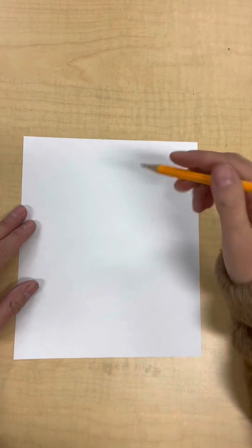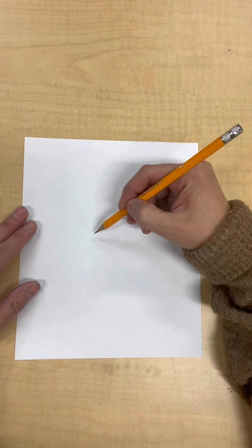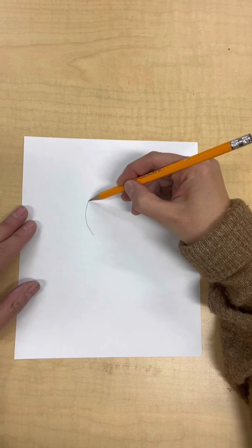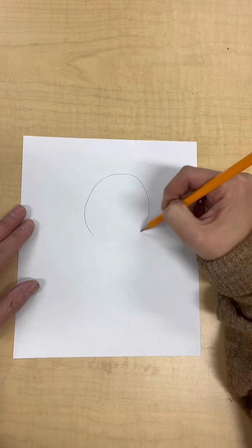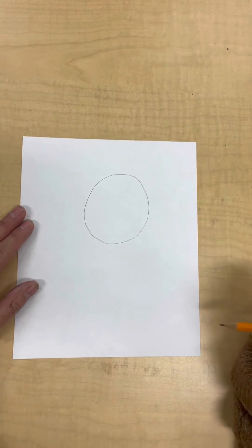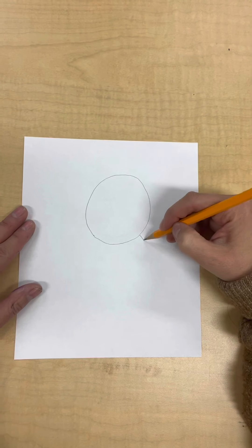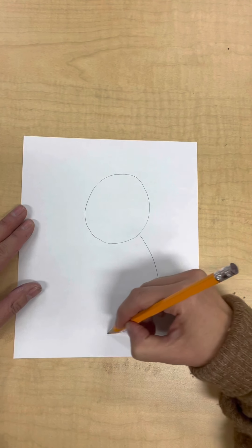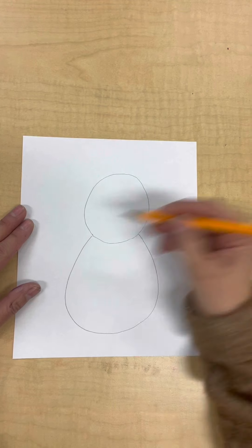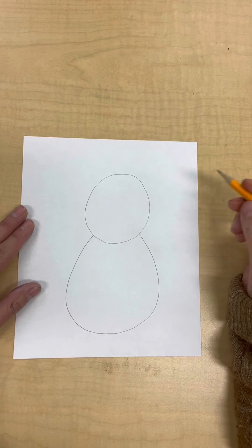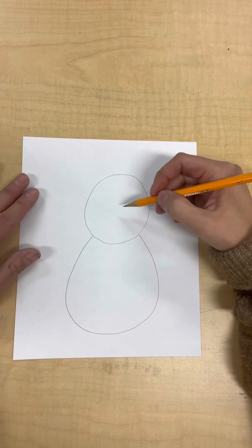So I've got my drawing paper, I've got my pencil. I'm going to start with the turkey's head which is just going to be kind of like a circle, and then I'm going to draw his body down like this. And let's start with his face.